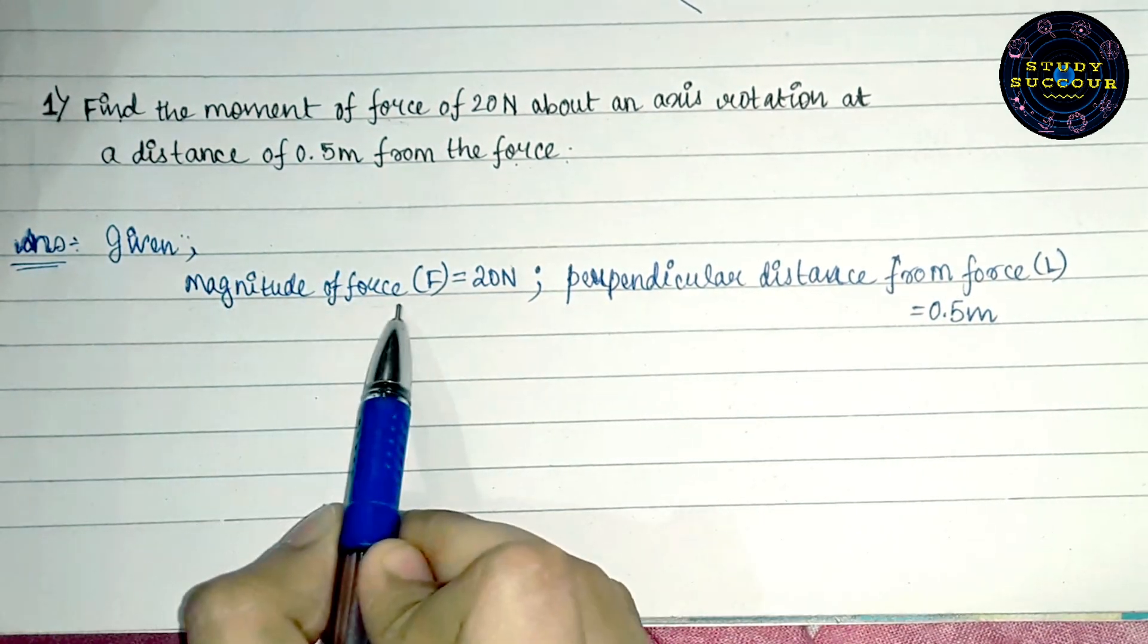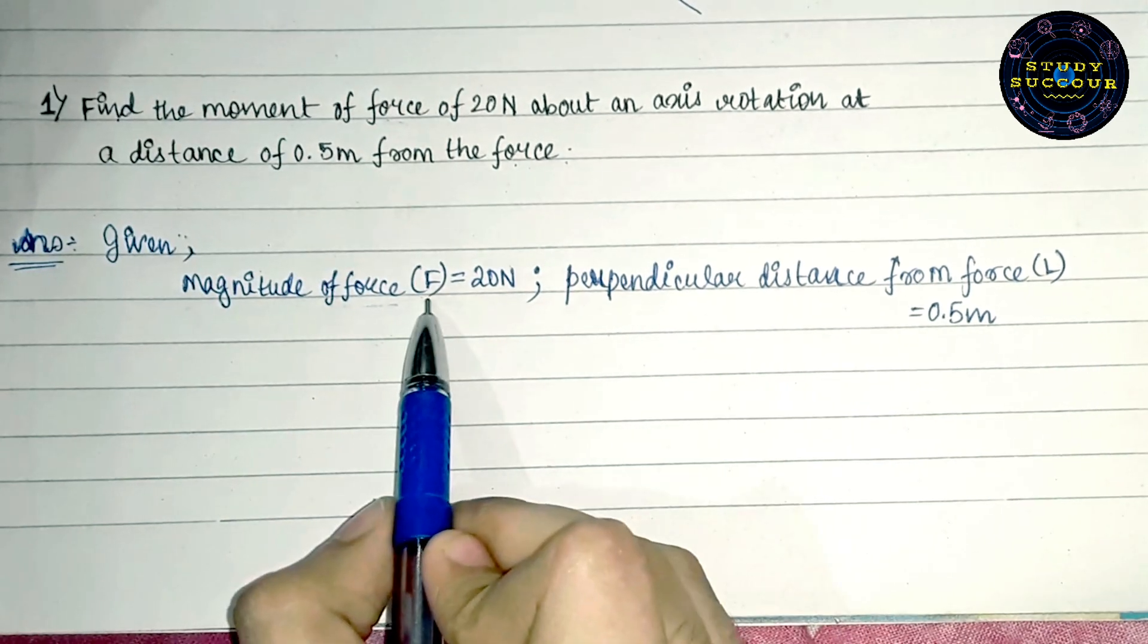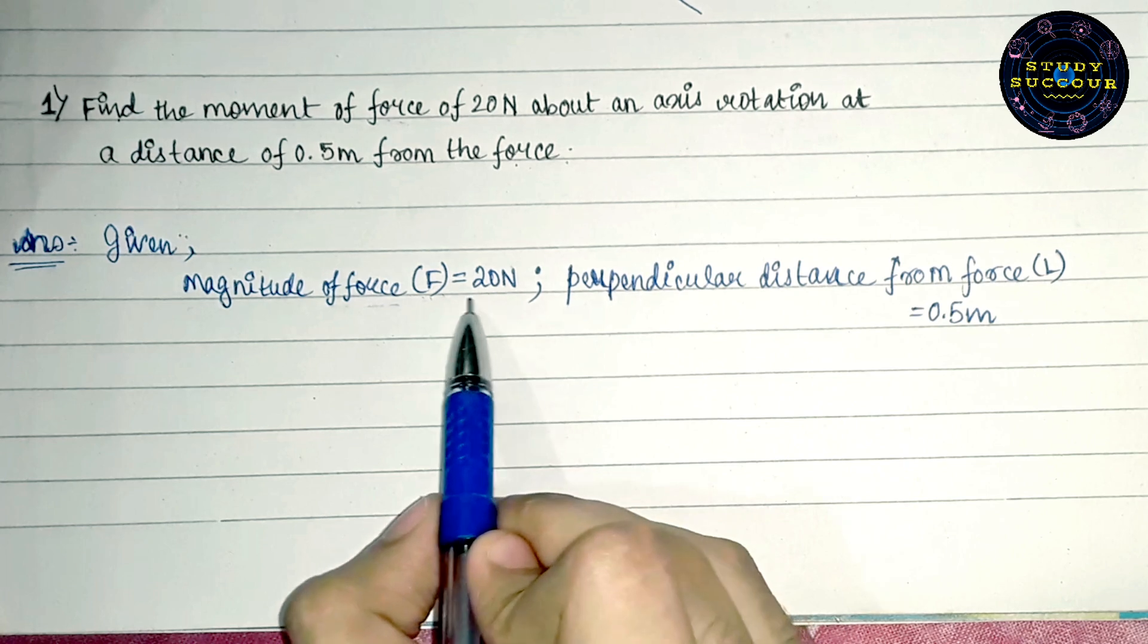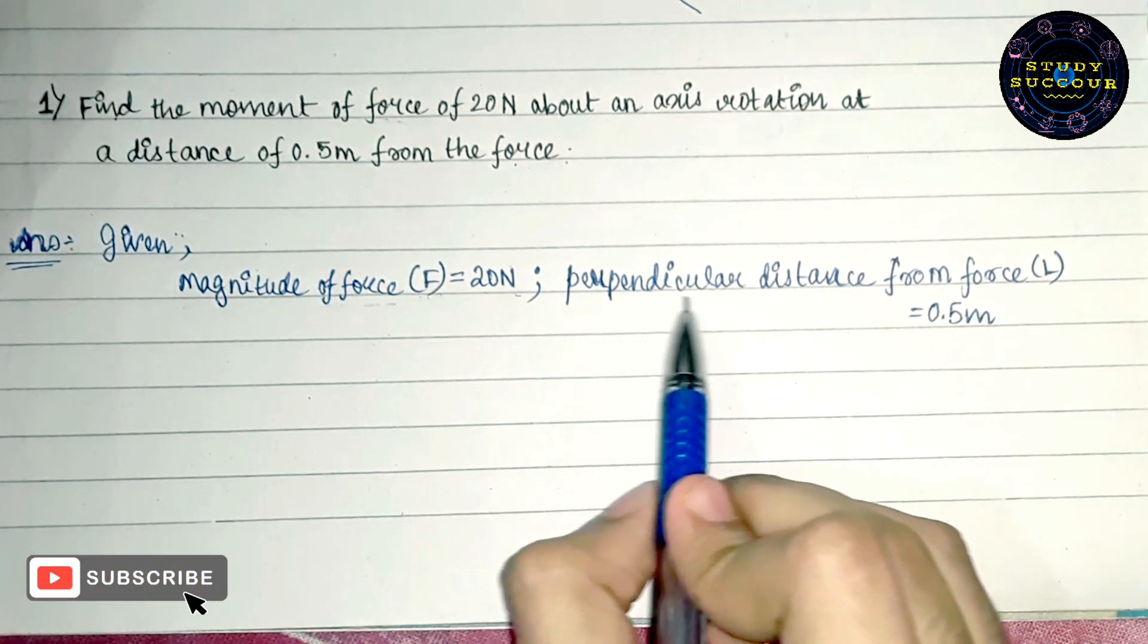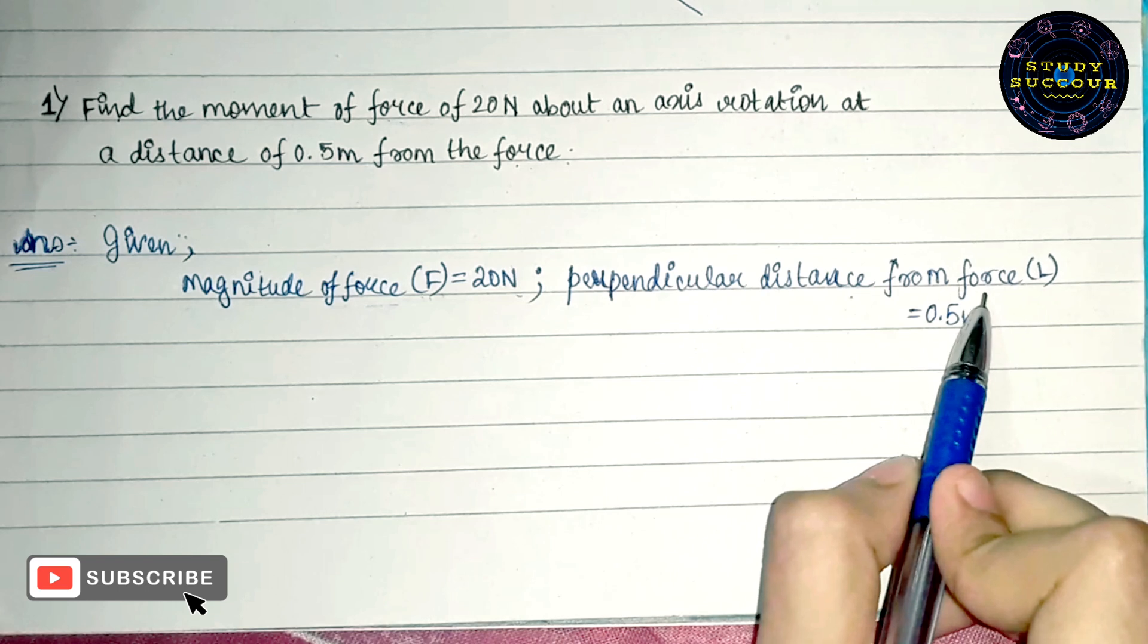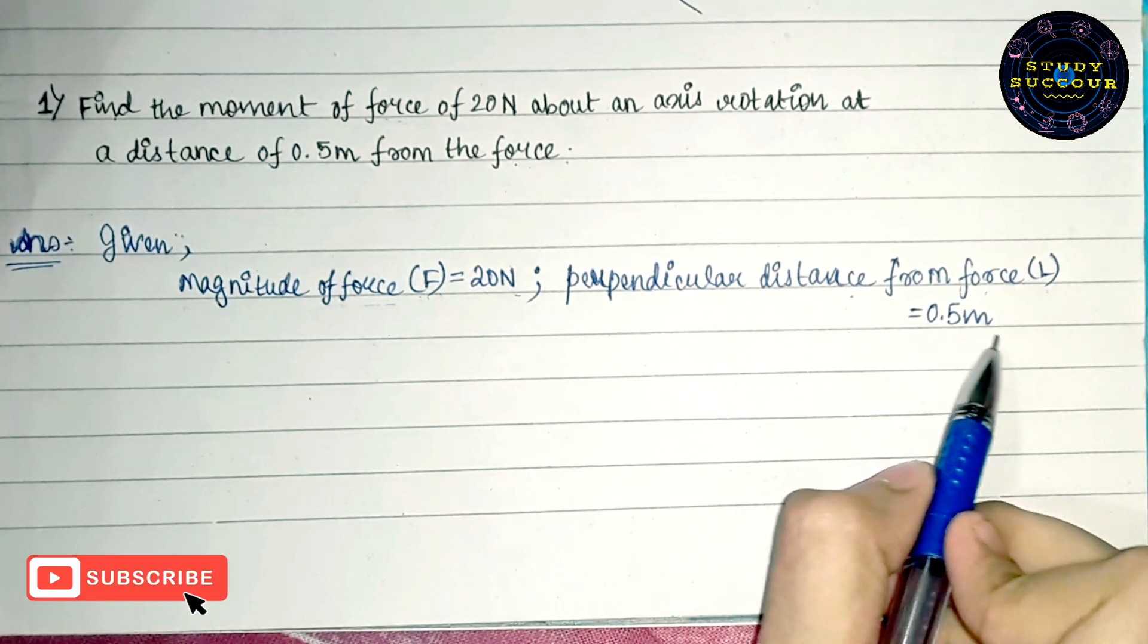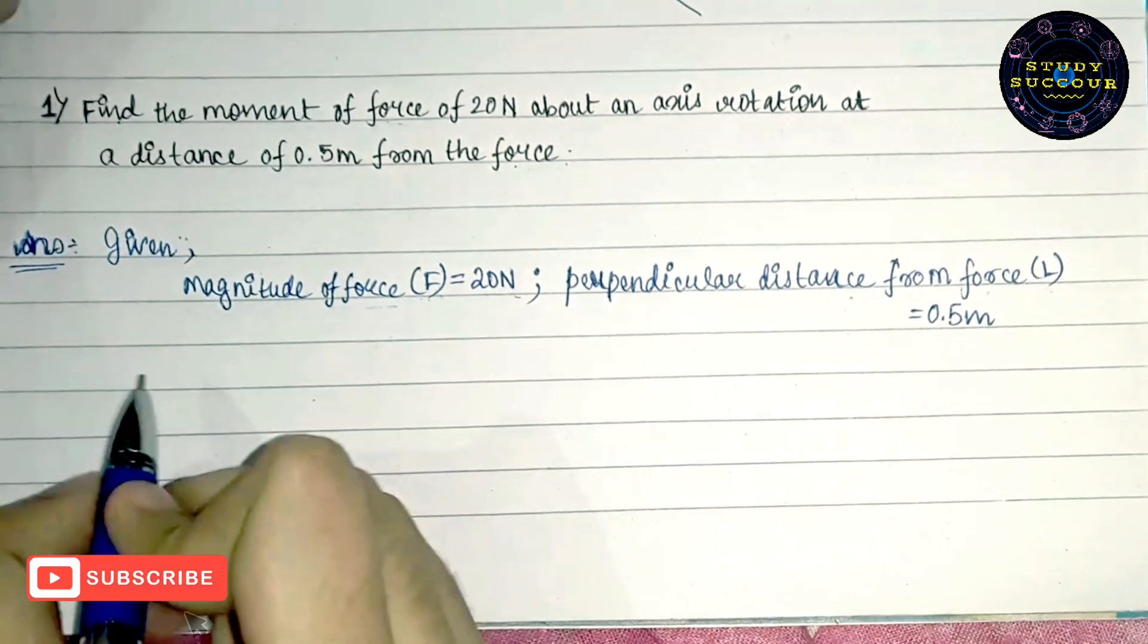So, here we first write down that magnitude of force which we will be denoting by F all throughout the problem is equals to 20 Newton and the perpendicular distance from the force which we will be denoting by L is equals to 0.5 meters.